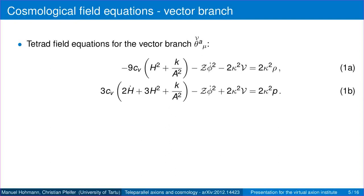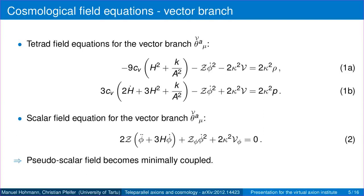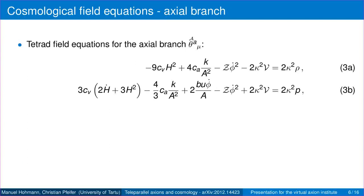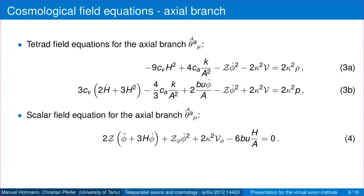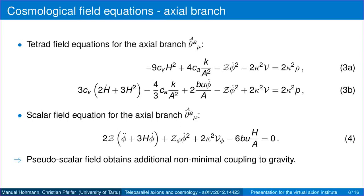We now insert the cosmologically symmetric teleparallel geometry into the Friedmann equations. For the vector branch, the generalized Friedmann equations show a contribution corresponding to that of a minimally coupled scalar or pseudoscalar field, which is also visible in the scalar field equation. Hence the cosmological dynamics in this case behaves the same as for a minimally coupled field. This is different for the axial branch, where we find an additional contribution from the non-minimal coupling term B, also expressed in the scalar field equation — note there is no term from B-tilde. Hence one of the non-minimal coupling terms contributes to the cosmological dynamics.